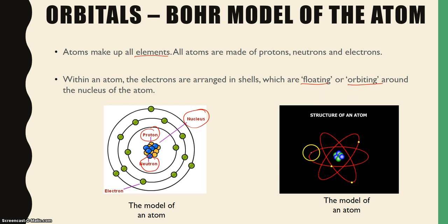Electrons are arranged in shells and these are floating or orbiting around the nucleus. As you can see in this diagram, this GIF file, the electrons shown in yellow moving around the nucleus are moving in these orbits or circle arrangements. That is the Bohr model of the atom.